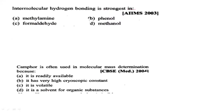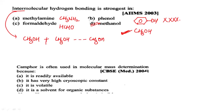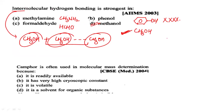Intermolecular hydrogen bonding is strongest in which compound — hydrogen bonding, methylamine, formaldehyde, phenol, or methanol? Phenol does not form intermolecular hydrogen bonding in this context, so the answer is methanol — an alcohol with O-H group. Intermolecular means one methanol molecule forms hydrogen bonds with another methanol molecule. If hydrogen bonding occurs within one molecule, that is intramolecular hydrogen bonding — that is the key difference.